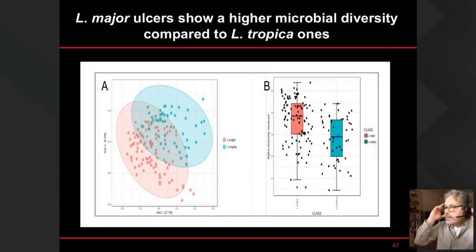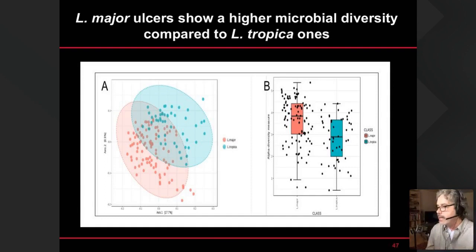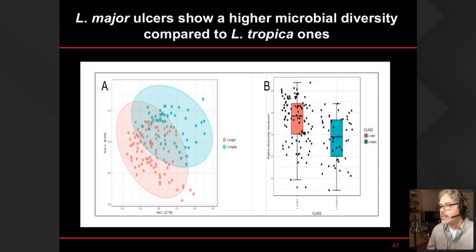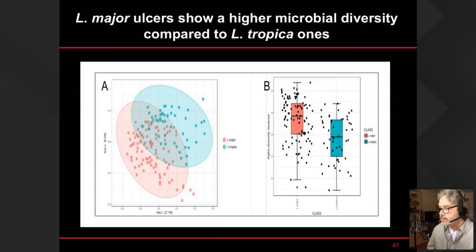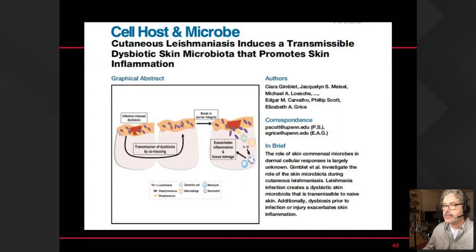Comparing L. major and L. tropica more broadly — there is higher diversity in L. major compared to L. tropica. We know L. tropica is very hard to treat. We couldn't get specific L. tropica samples for the longitudinal studies done with L. major, but the correlation is already clear: L. tropica is already less diverse and tends toward more dysbiosis compared to L. major patients.